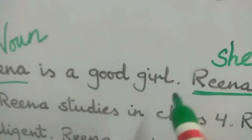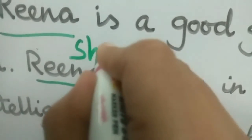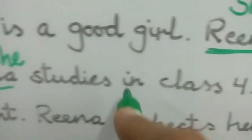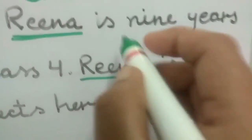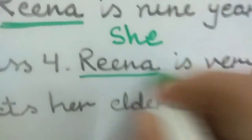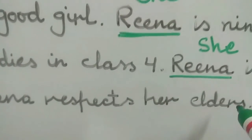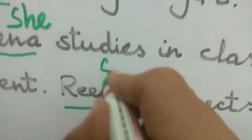'Reena is a good girl. She is 9 years old.' Again Reena's name is repeated, so we write 'she'. 'She studies in class 4.' Again the noun is there, so at the place of the noun I write the pronoun: 'She is very intelligent.' 'Reena respects her elders' — again the noun is repeated, so I write 'She respects her elders.'